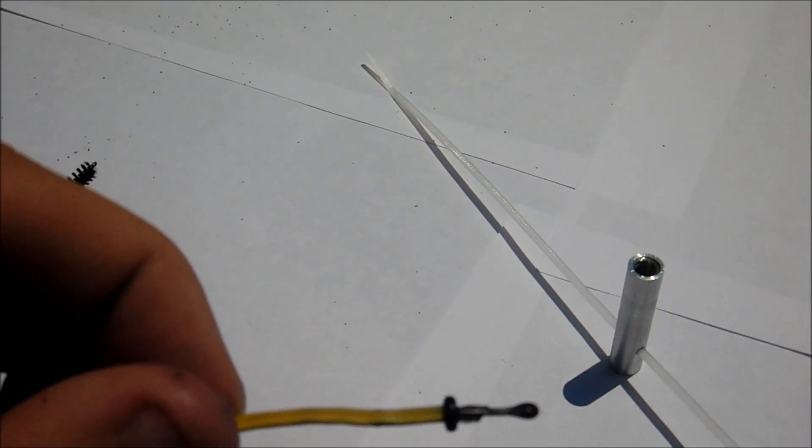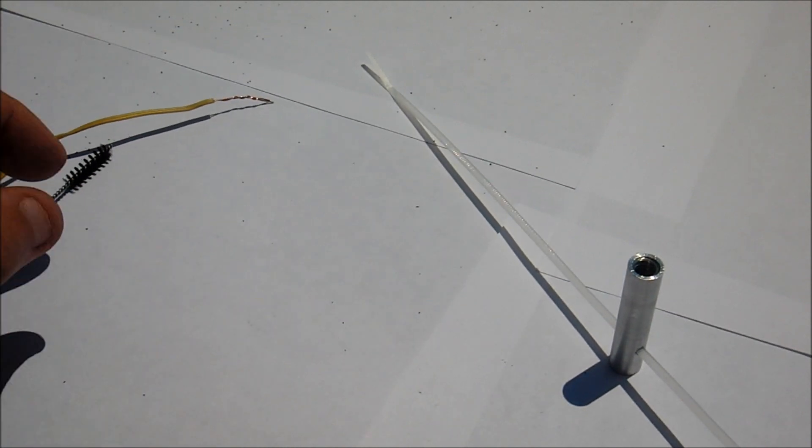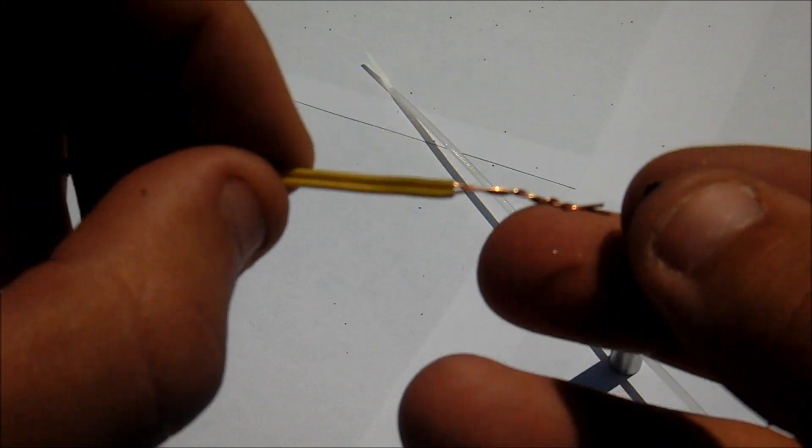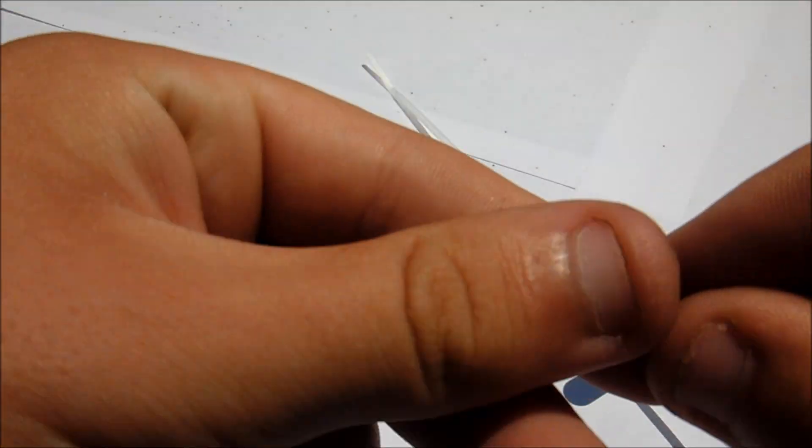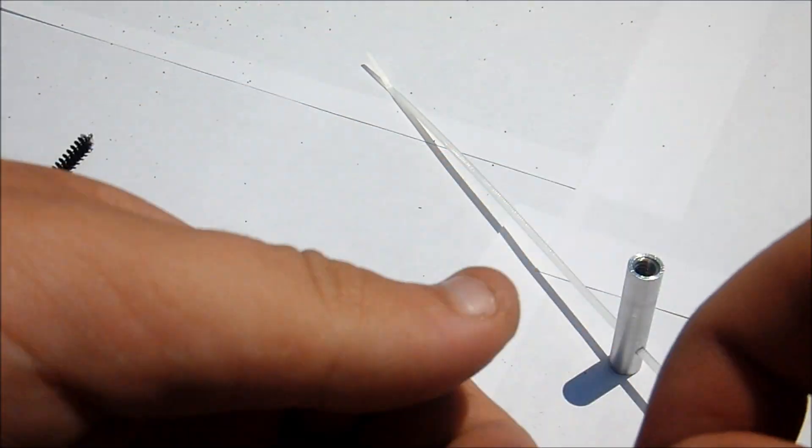So now we have the one o-ring on there that didn't work. What you can do is take a second o-ring, place it over the wires, and again run it all the way to the head of the e-match.